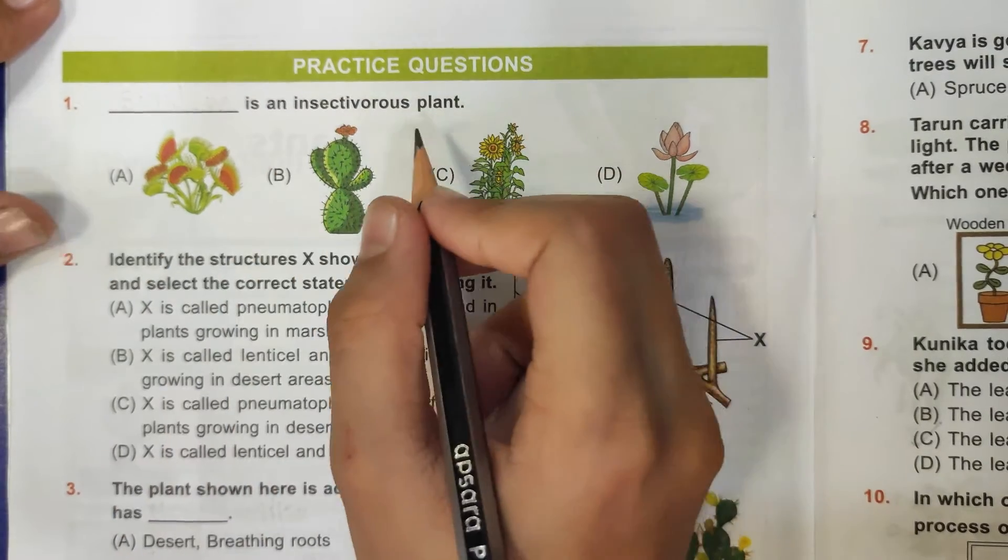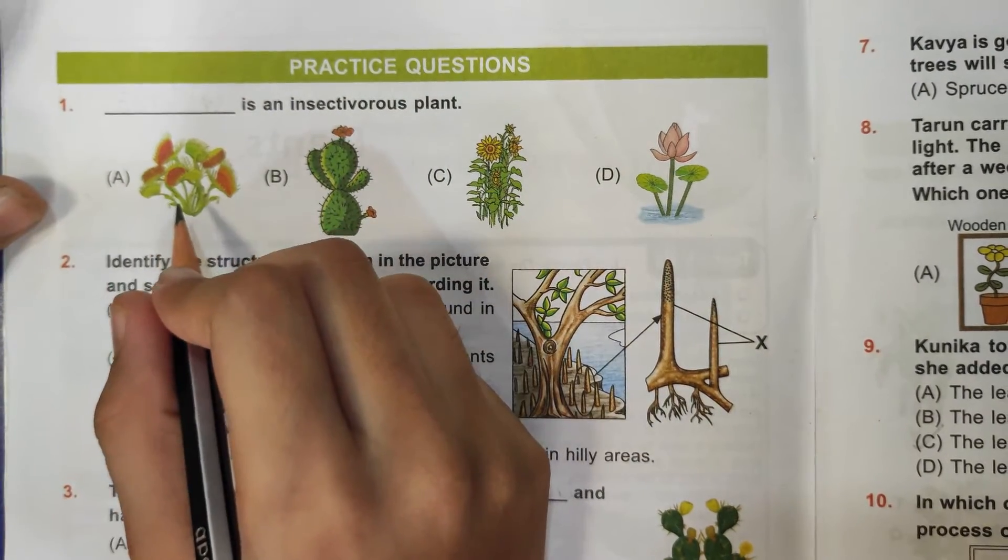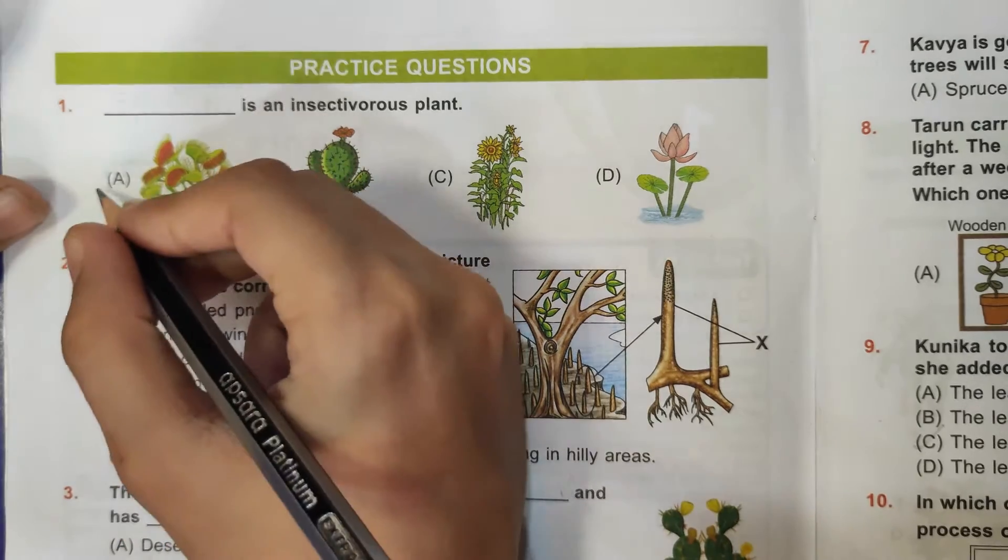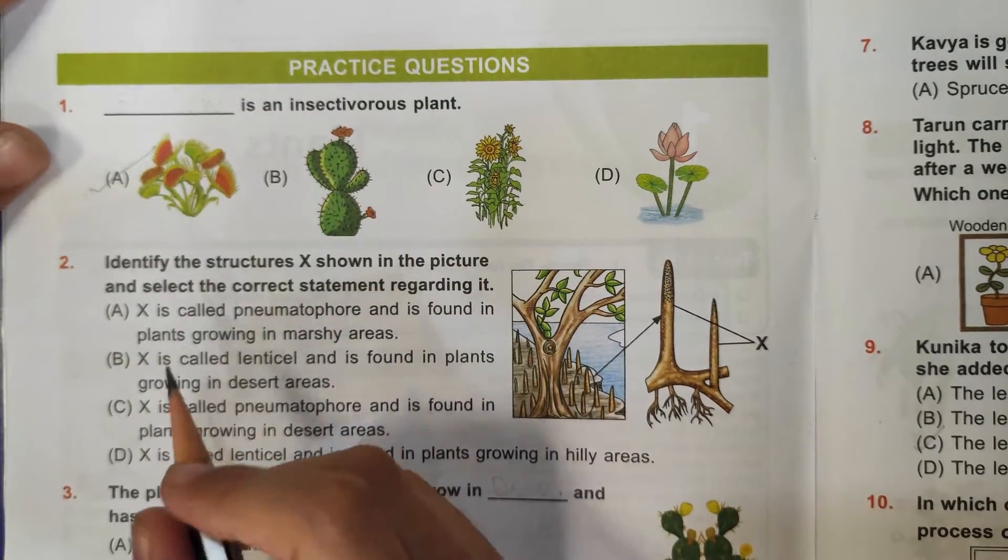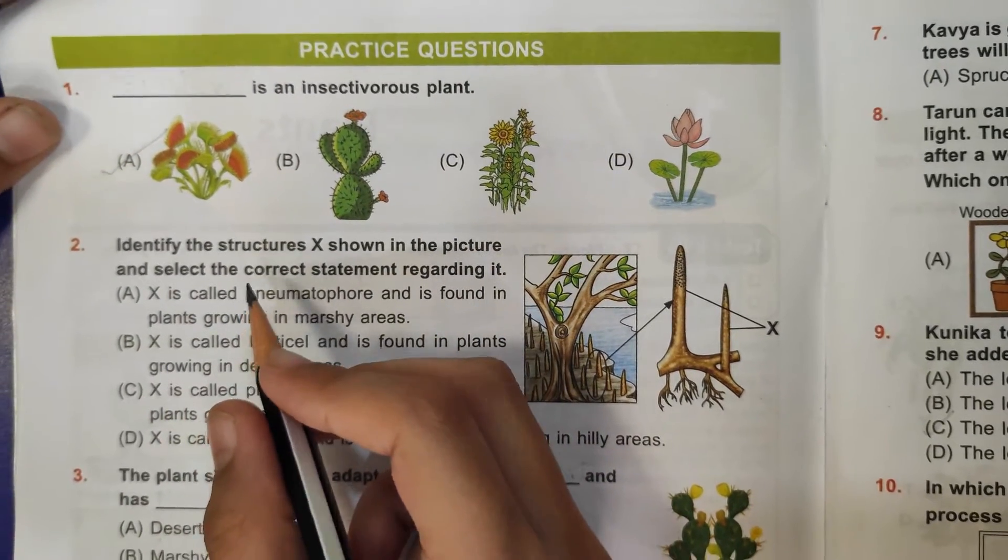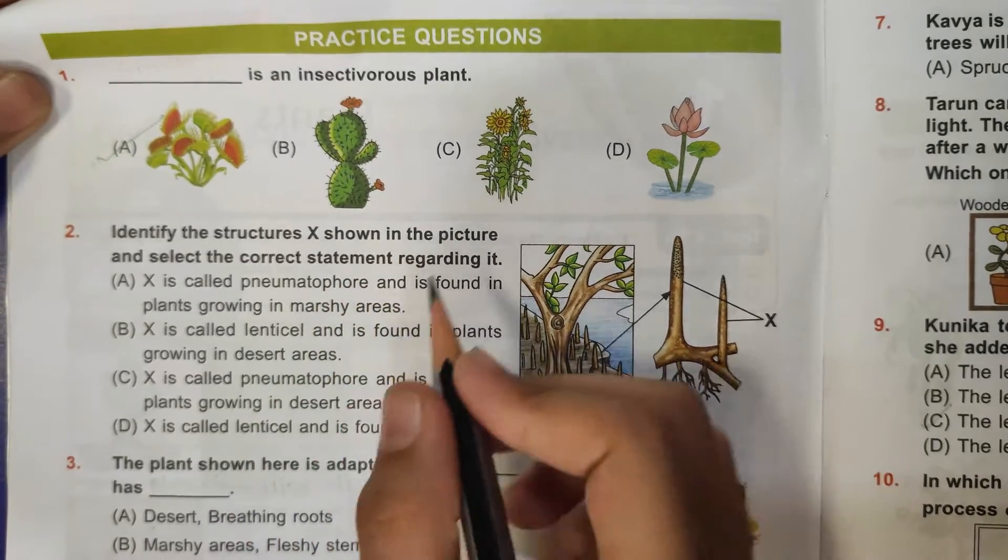First question: dash is an insectivorous plant. So, sundew is an insectivorous plant, so A sundew is the correct answer. Second question: identify the structure X shown in the given picture and select the correct statement regarding it.